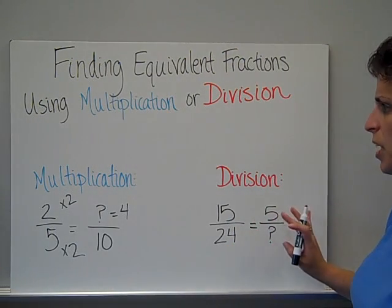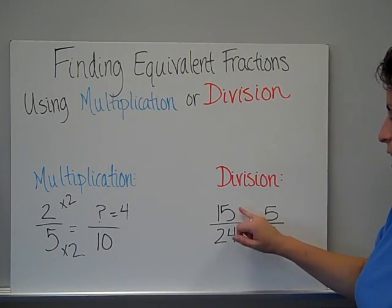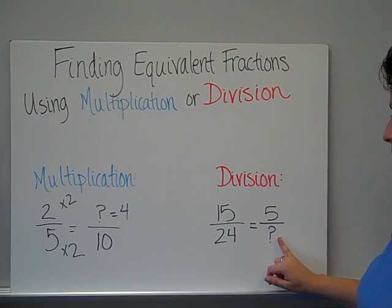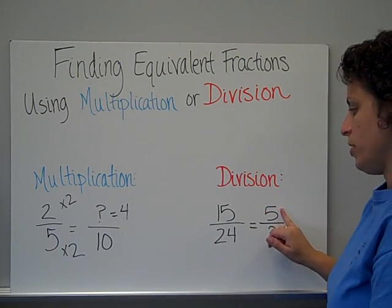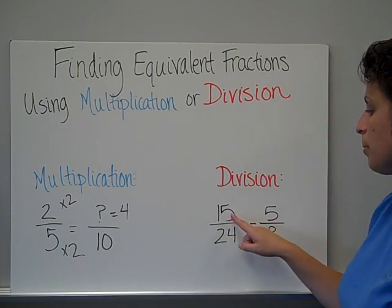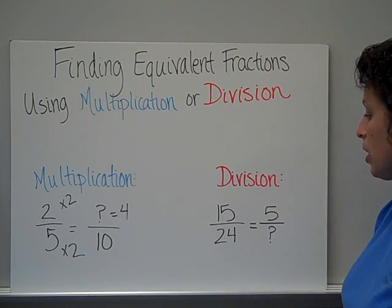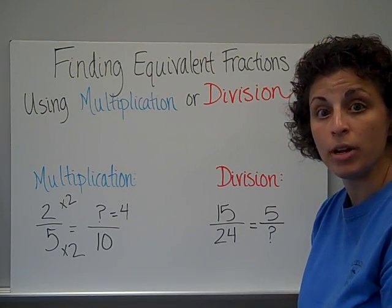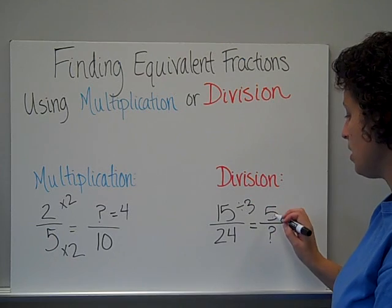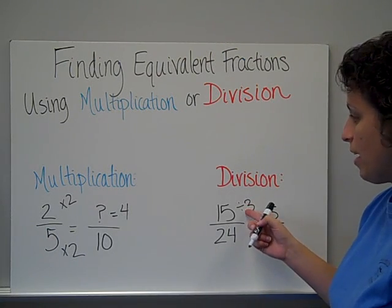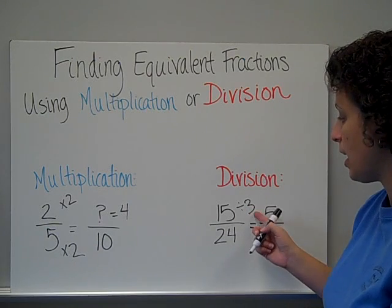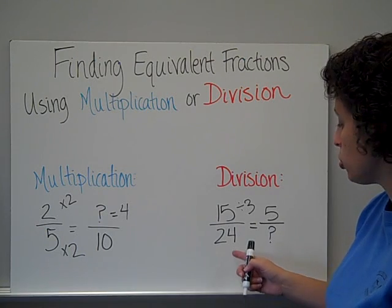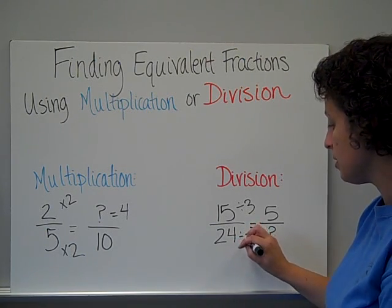Let's look at this one. In this case, we're going to use division. I have a fraction, fifteen-twenty-fourths, and we see that it's going to equal five-somethings. We're not sure what. I know that it's division here, because not only does it tell me, but I'm going from a larger number to a smaller number. So, what can I divide fifteen by that will give me five? Three. Fifteen divided by three is going to make five. Whatever operation and number you use to change, in this case the numerator, we have to do the same thing to the denominator.